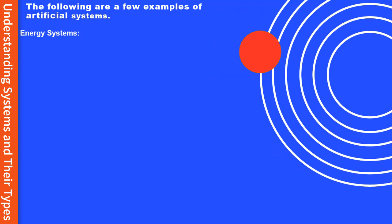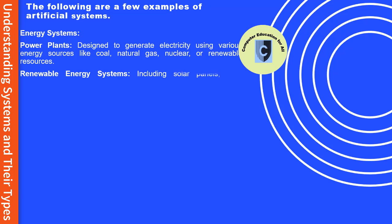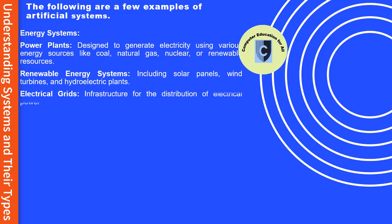Energy systems include power plants designed to generate electricity using various energy sources like coal, natural gas, nuclear, or renewable resources; renewable energy systems including solar panels, wind turbines, and hydroelectric plants; and electrical grids — infrastructure for the distribution of electrical power.